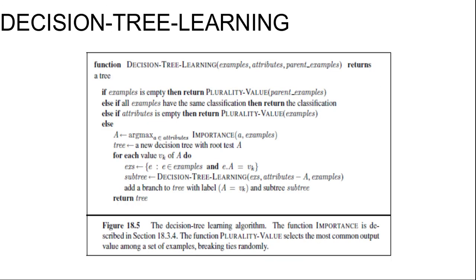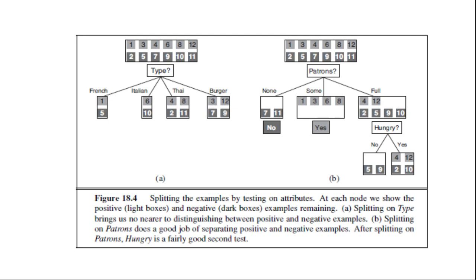So here is the decision tree learning algorithm. There is a figure here that shows the type and patron attributes. Because it leaves us with four possible outcomes, each of which has the same number of positive or negative examples. On the other hand, you can see in figure B.